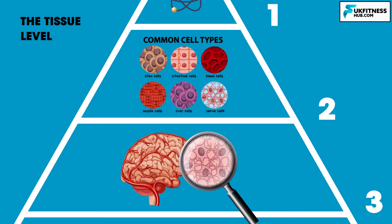Level 3: the tissue level. Tissue is a group of similar cells that have developed from the same part of the embryo and all perform a certain function. An example would be that groups of muscle cells will make muscles. There are four different types of tissue within the human body: connective tissue, muscle tissue, epithelial tissue and nervous tissue.